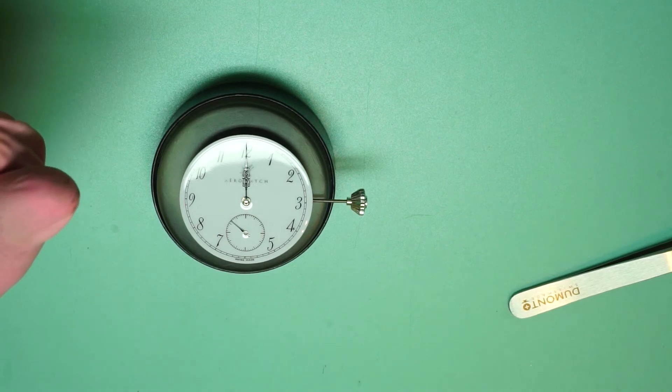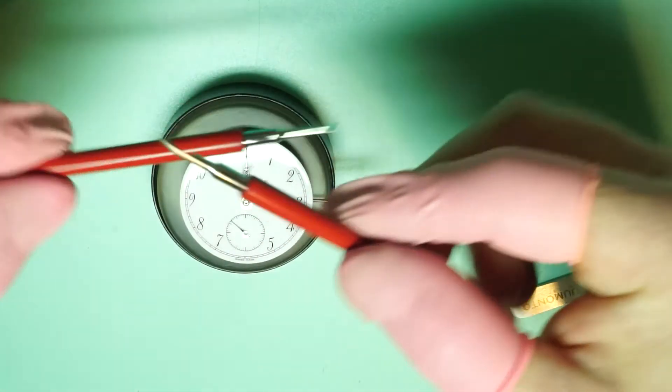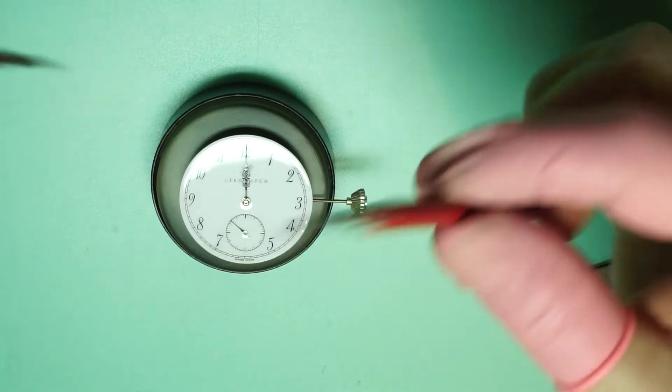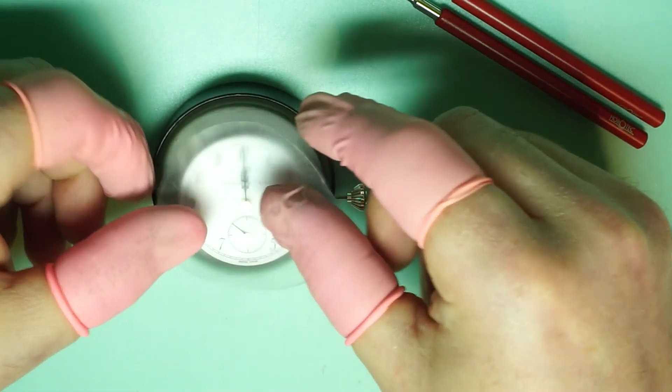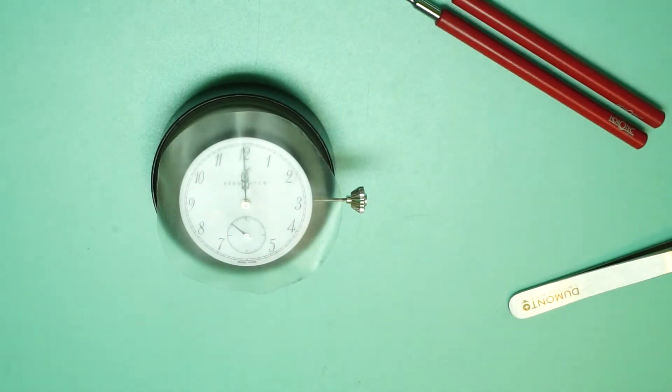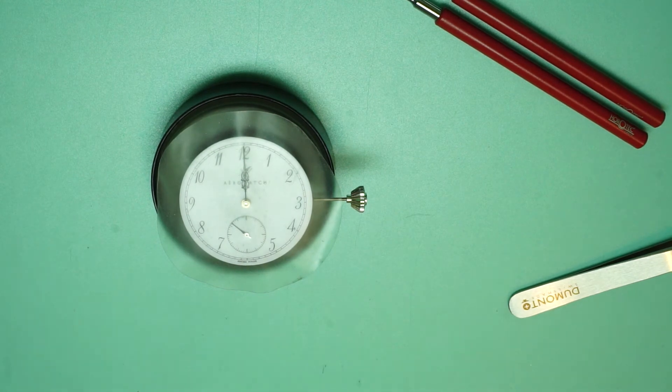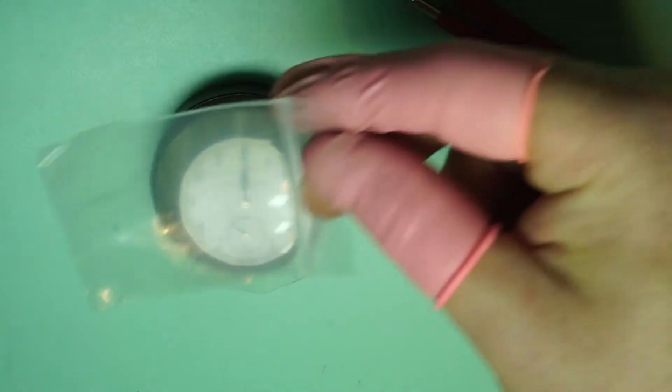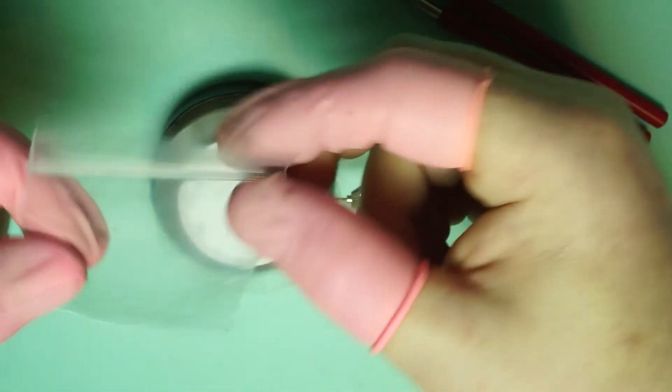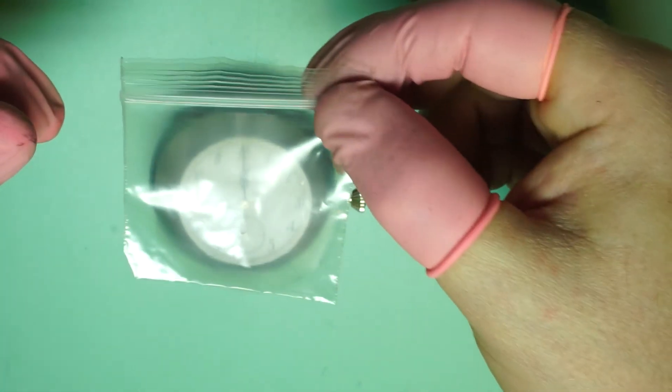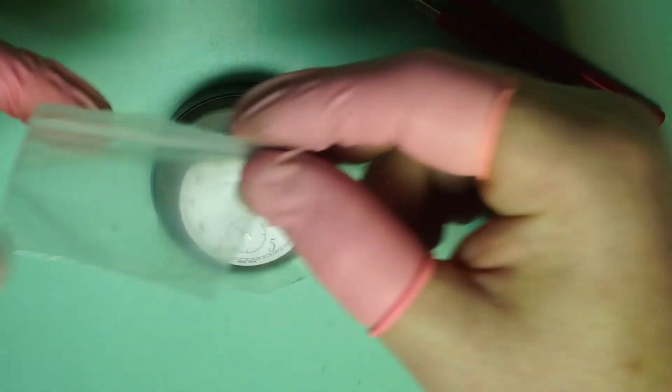So in order to take the hands off you're going to need a pair of hand levers. So I'm using a pair of Horrotec hand levers here and I'm going to use a silicon dial pad. If you don't have a silicon dial pad you can use a baggie, a small ziploc bag, something like this which you might be more familiar with. It will certainly do the job and it will reduce the risk of you damaging the dial.